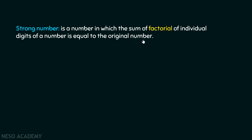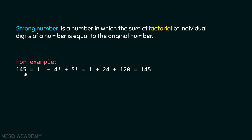Let's consider one example. Suppose we have the number 145. We need to take the individual digits and calculate the factorial of each of them — 1 factorial, then 4 factorial, then 5 factorial — and then add them together. If the result equals the actual number, it is a strong number; otherwise, it is not.